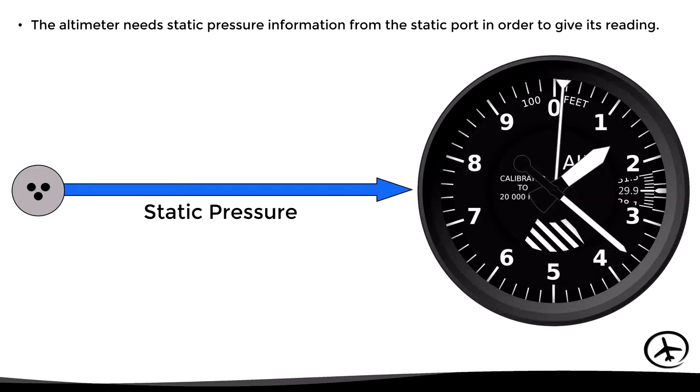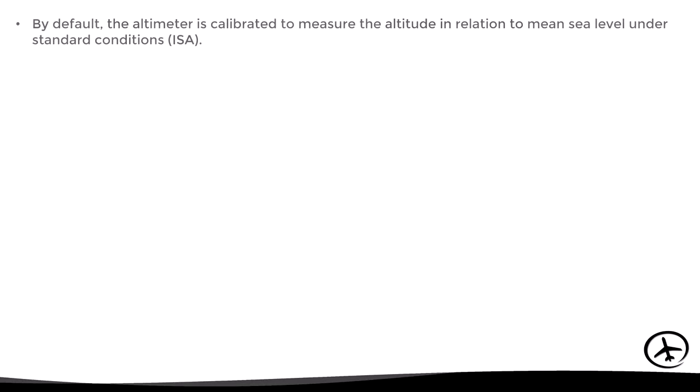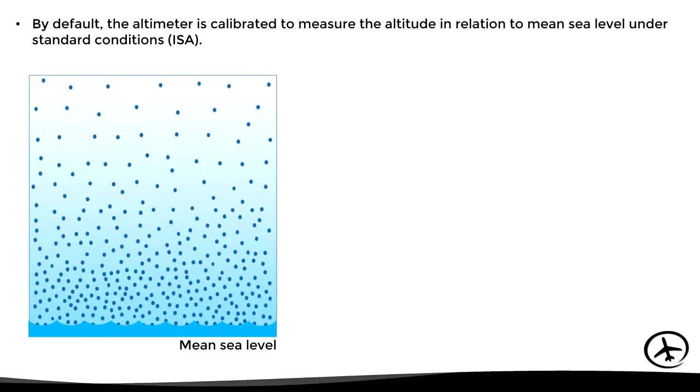That is why the altimeter needs to be connected to the static port, since it needs to detect changes in atmospheric pressure to give the altitude reading. By default, the altimeter is calibrated to measure altitude in relation to the mean sea level under standard conditions. The standard pressure at sea level is 29.92 inches of mercury, or 1013 hectopascals.